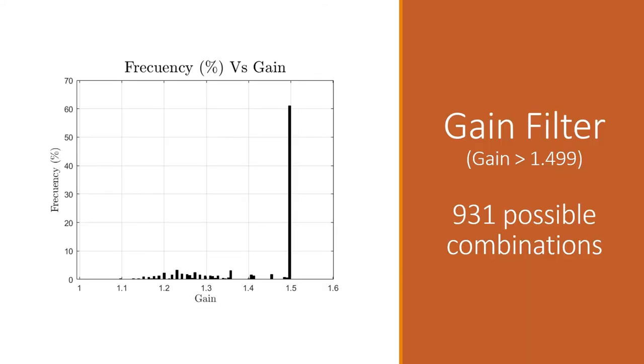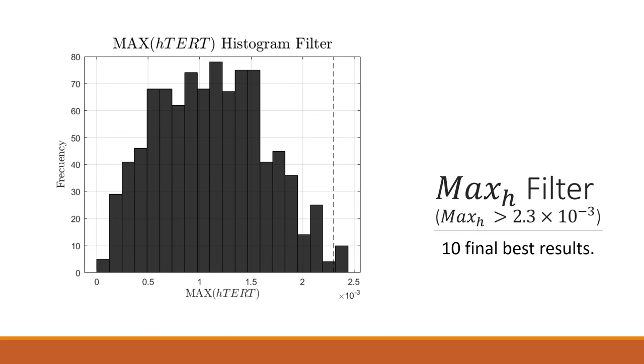First of all, we made a gain filter. So we did all the combinations and we evaluated which ones have a gain that was more than 1.499, and that gave us 931 possible combinations.